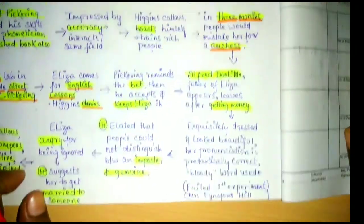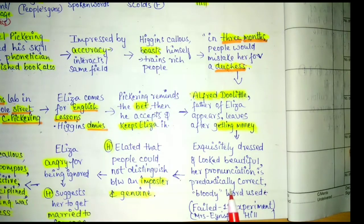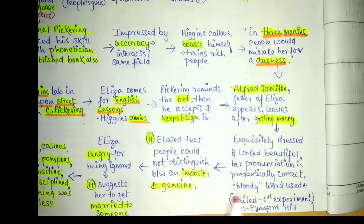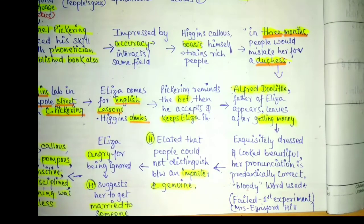Eliza was given proper training and was exquisitely dressed — she looked very beautiful. Her pronunciation was made phonetically correct. Up to this point, nobody could make out that she was not from an elite community. But then she made one mistake — she used the word 'bloody' to Freddie in conversation, showing that however a person can be changed, in reality they reveal their true nature.